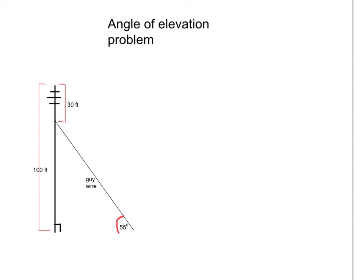So a guy wire is attached 30 feet from the top of the 100-foot tower. So I've got a 100-foot tower here, and a guy wire is attached 30 feet down from the top.